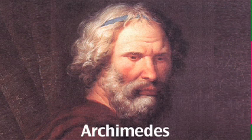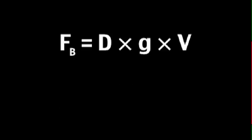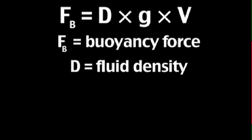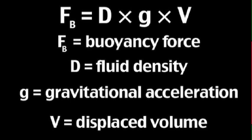The exact equation found for the buoyancy force is given by Fb equals D times G times V, where Fb is the buoyancy force, D is fluid density, G is gravitational acceleration, and V is displaced volume.